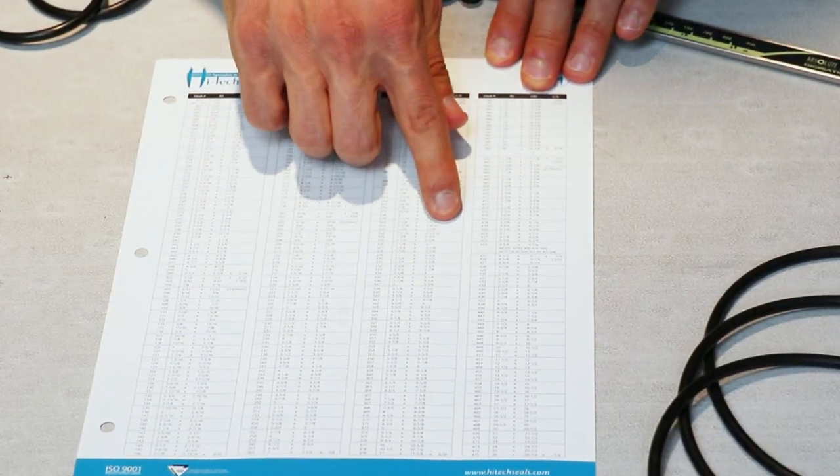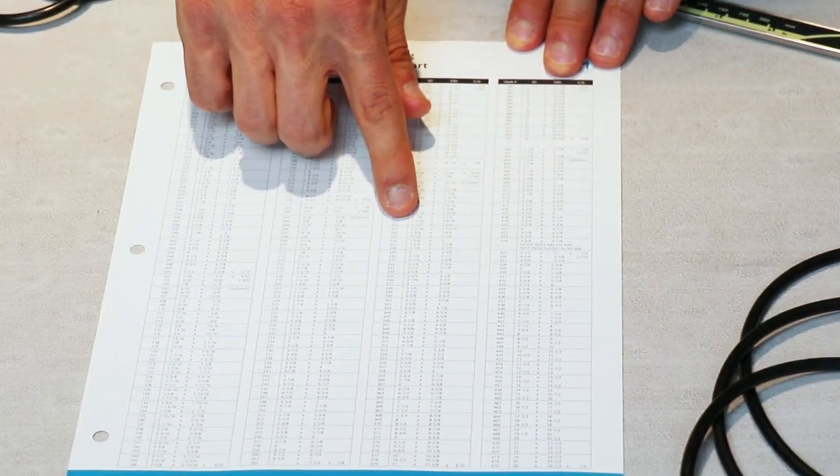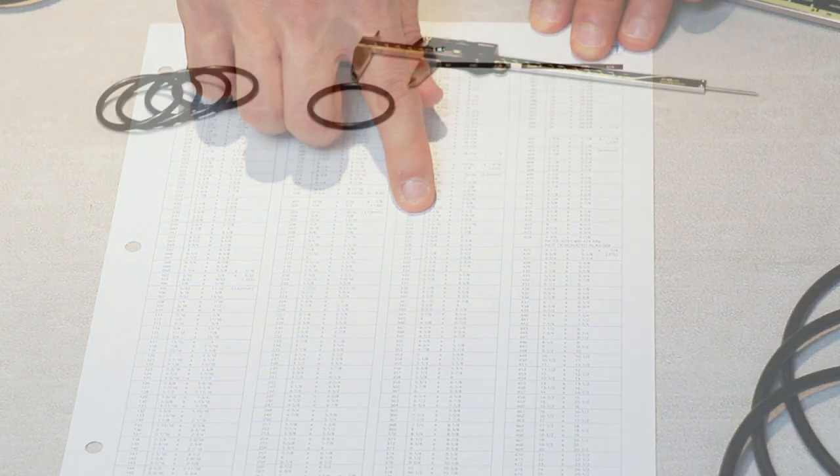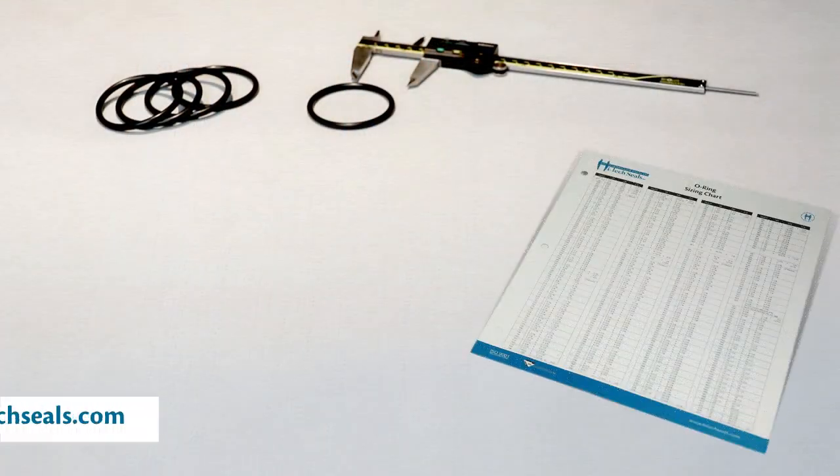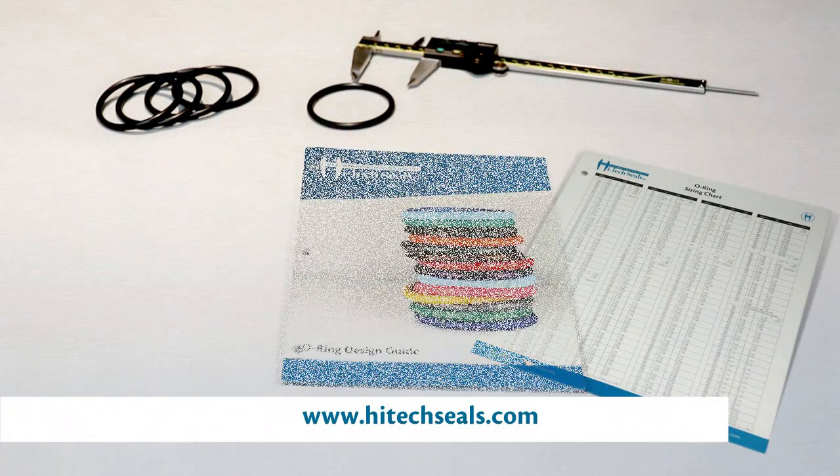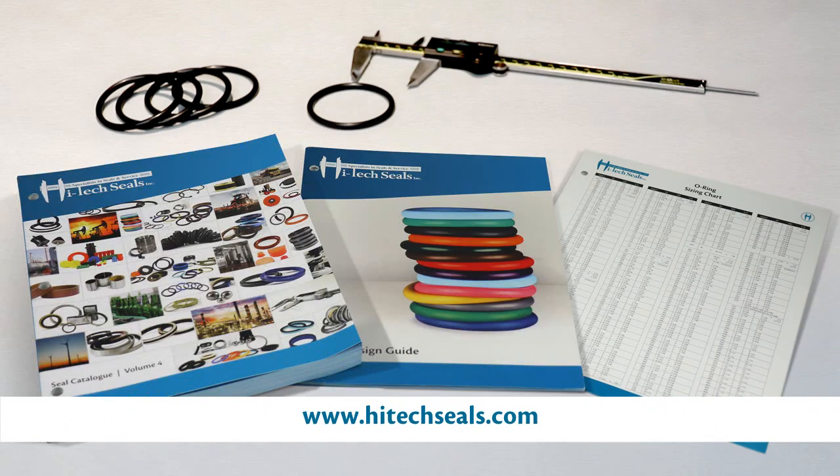To find an AS568 o-ring size, take the measurements you gathered and compare them against an o-ring part number table. These tables can be found on our o-ring size chart, on our o-ring design guide, on our catalog, or on our website.